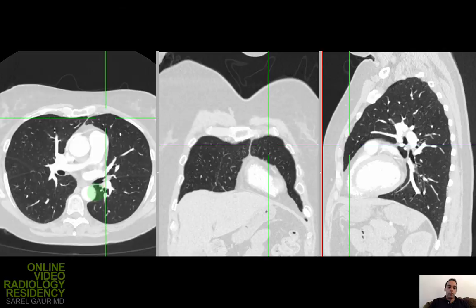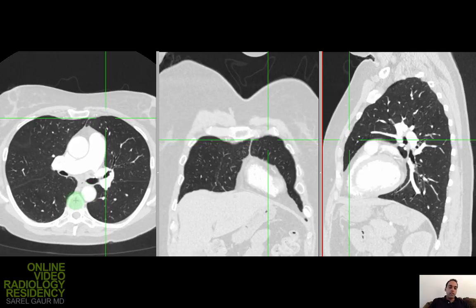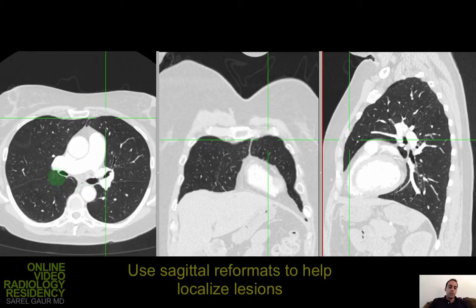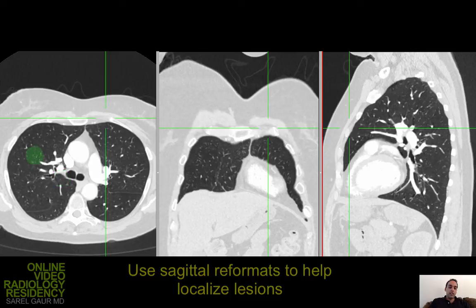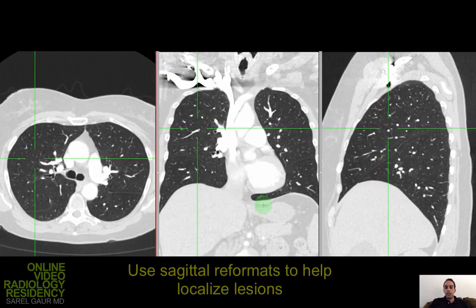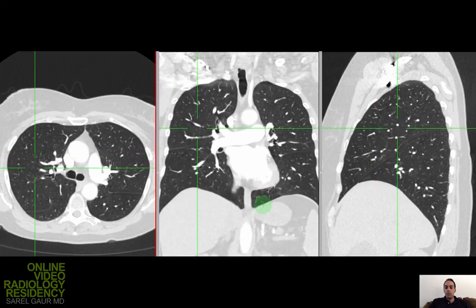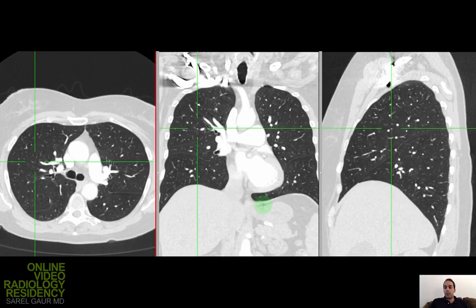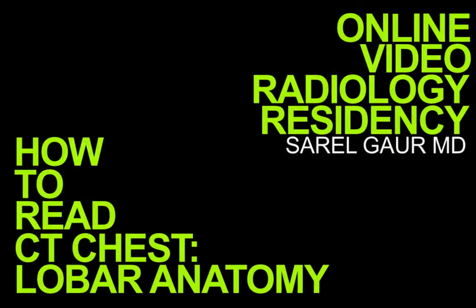Just a couple of tips when you're interpreting images: if you have any question of where you are on the axial images, use the localizer function to click and then use the sagittal to decide whether you're above the major fissure or where you are in relation to the fissure, and then you can identify which lobe you're in. Thank you very much for watching. Please watch the next video on bronchopulmonary segments.